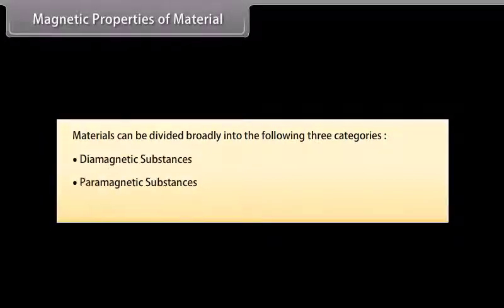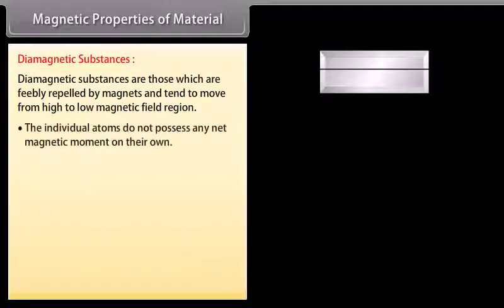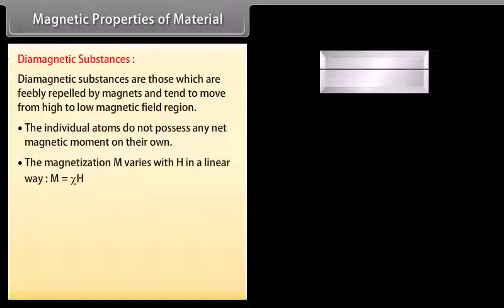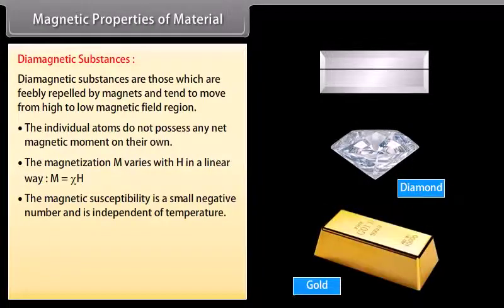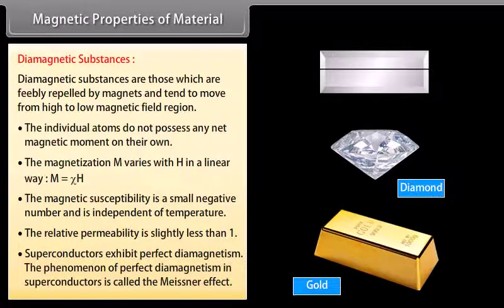Materials are broadly divided into three categories: diamagnetic, paramagnetic, and ferromagnetic substances. Diamagnetic substances are feebly repelled by magnets and tend to move from high to low magnetic field regions. Their individual atoms do not possess any net magnetic moment. Magnetization M varies linearly with H (M = xi*H), and the magnetic susceptibility is a small negative number independent of temperature. The relative permeability is slightly less than 1. Superconductors exhibit perfect diamagnetism, known as the Meissner effect.